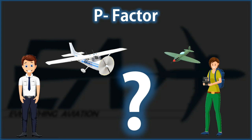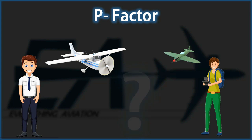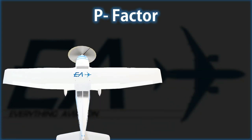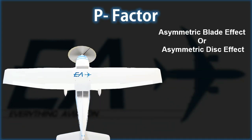What is P-factor? P-factor is also known as asymmetric blade effect or asymmetric disc effect, which is an aerodynamic phenomenon experienced by a moving propeller. P-factor is all to do with asymmetric propeller loading.